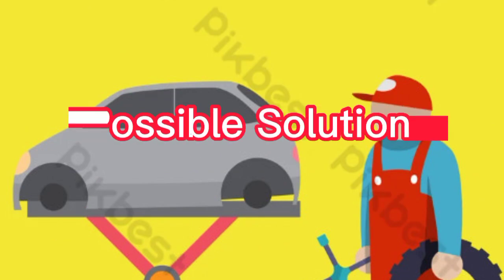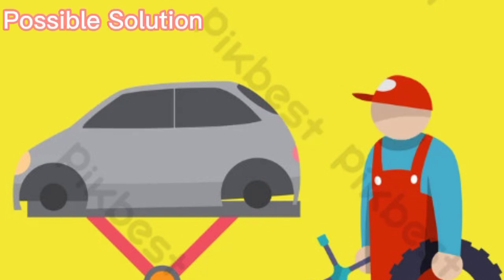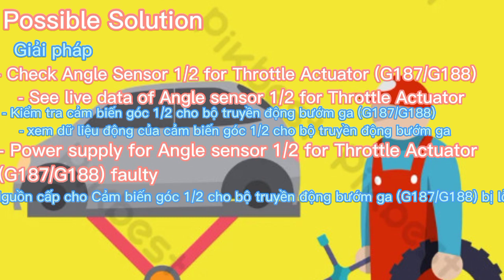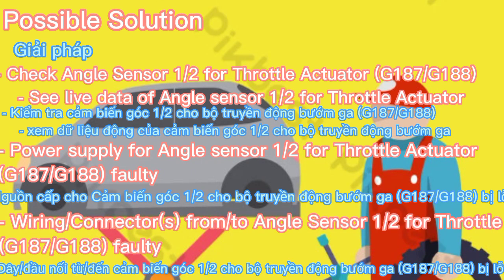Possible solutions: Check angle sensors 1/2 and 4 throttle actuator G187 and G188. See live data of angle sensors 1/2 and 4 throttle actuator. Check power supply for angle sensors 1/2 and 4 throttle actuator G187 and G188. Check wiring and connectors from/to angle sensor 1/2 and 4 throttle actuator G187 and G188.